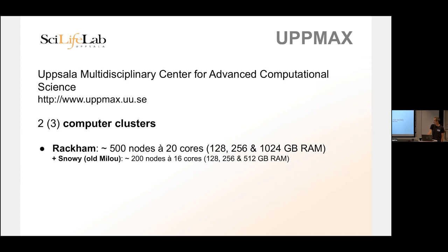We also have high-memory nodes with 256 gigabytes or 1 terabyte of RAM. We also have our old cluster called Snowy — it used to be called Melo when it was our main bioinformatics cluster. It's from 2013, so it's a bit slower, but not that much has changed in the CPU market since then, so it's pretty quick. It usually has a shorter queue, so it's a good place to run calculations. It has 200 nodes with only 16 cores each, slightly smaller, but memory-wise roughly the same — 128 gigabytes standard.